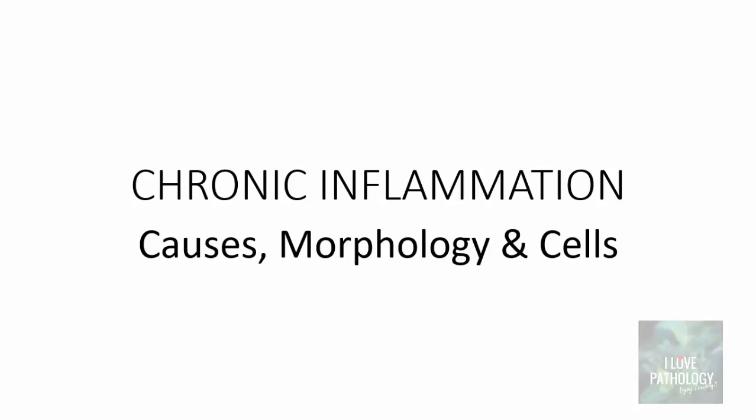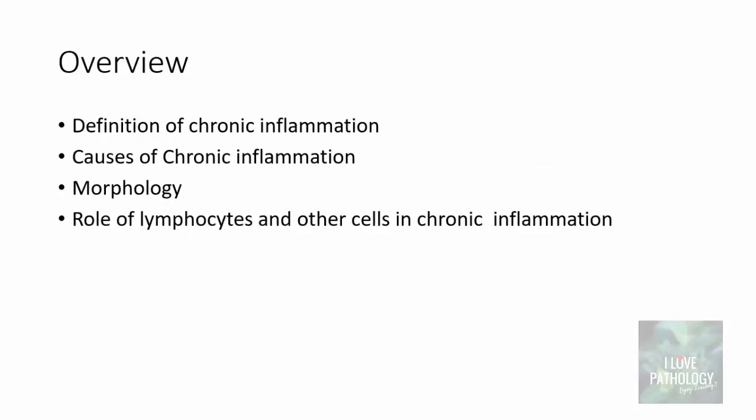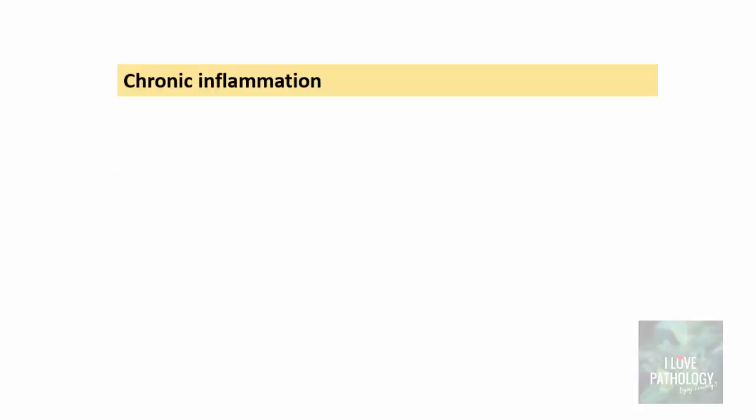The topic I am going to discuss today is chronic inflammation — some basics of chronic inflammation, the causes, the morphology, and some cells involved. The overview will cover the definition of chronic inflammation, the different causes or settings where it can occur, some morphological aspects, and the role of lymphocytes and other cells. I will be discussing mainly about lymphocytes because I had already talked about the role of macrophages in chronic inflammation and granuloma formation in another video, the link for which will be put in the description below.